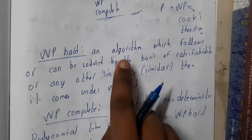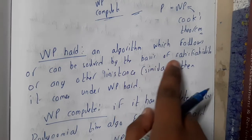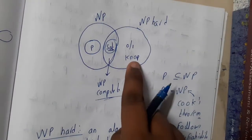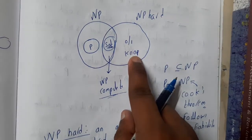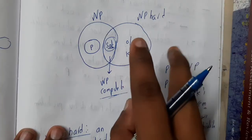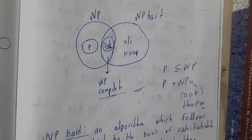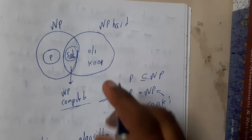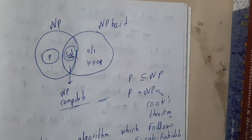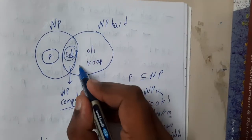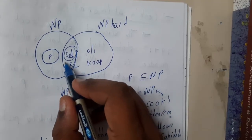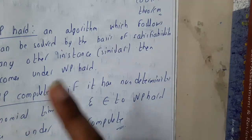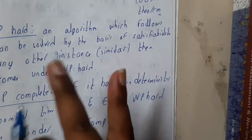An algorithm which follows or can be solved by the basics of satisfiability or any similar instance can come under NP-hard. 0/1 knapsack belongs to NP-hard because we assumed both are equal and if one is solved the other is also solved. For NP-complete, if a problem has a non-deterministic polynomial time algorithm — like writing a non-deterministic algorithm for 0/1 knapsack — it moves into NP. If you then convert that non-deterministic algorithm into a deterministic one, it pushes into polynomial time. So inside NP we have two classes: NP-hard and NP-complete.